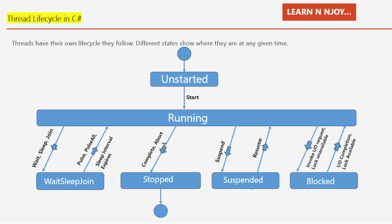When a thread completes its execution or is forcibly stopped using the Abort method, it enters the stopped state — the end of the thread's journey, like reaching the finishing line. If the Suspend method is used on a thread, it attempts to pause that thread's execution and its status changes to suspended. To get it moving again, we can use the Resume method — like hitting pause and then play on a video.